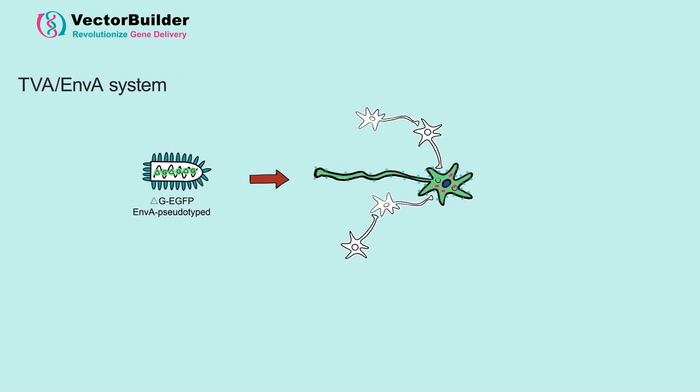Let's look at an example of how this works. If we want to see all of the monosynaptic inputs into this GnRH neuron but none of its neighboring neurons, we can use rabies virus pseudotyped with ENVA.